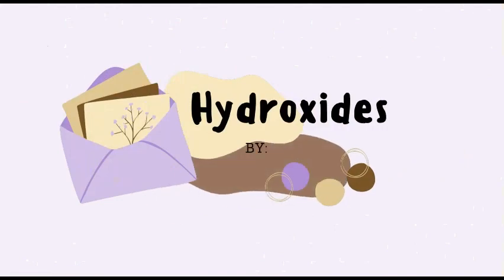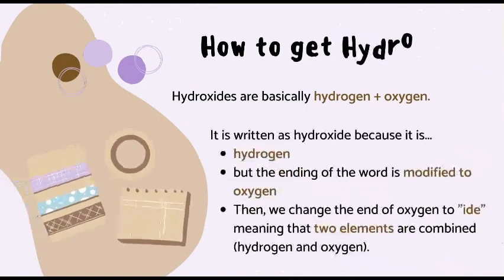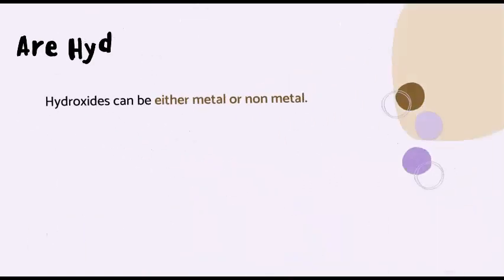Now, our second topic for today: hydroxides. How do you get hydroxides? Hydroxides are basically hydrogen plus oxygen. It is written as hydroxide because it is hydrogen, but the ending of the word is modified to oxygen. Then we change the end of oxygen to -ide, meaning that two elements are combined to make up hydroxides.